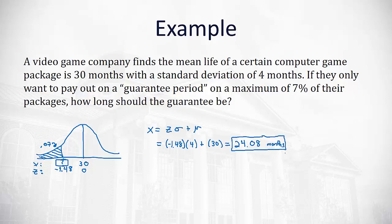If they have a guarantee of 24.08 months, they'll end up paying out on about 7% of their guarantees, and the other 93% will survive the guarantee period. That's how we can use the inverse normal distribution function.